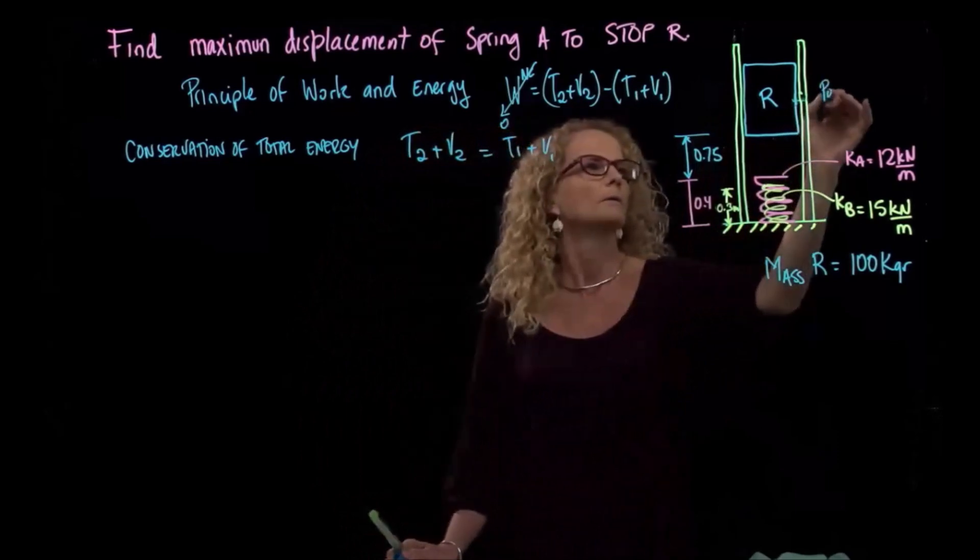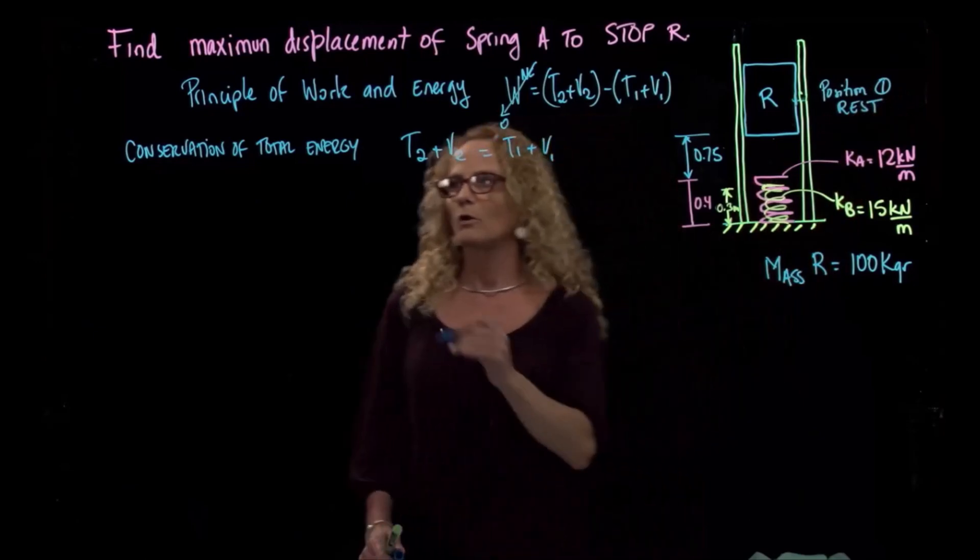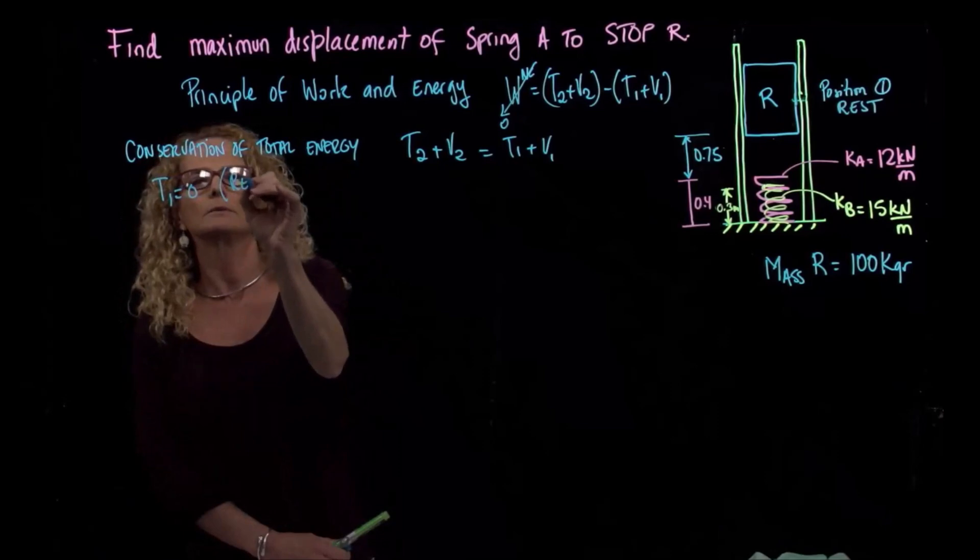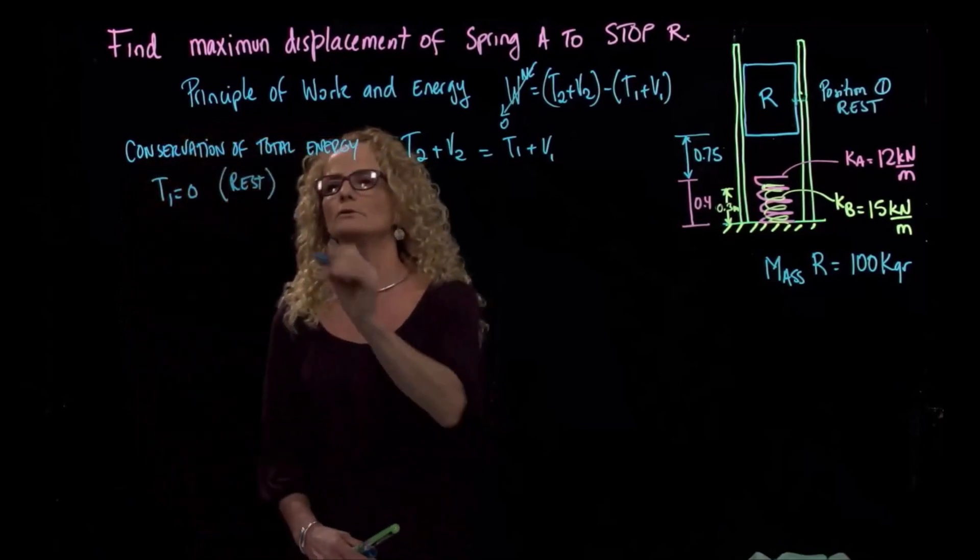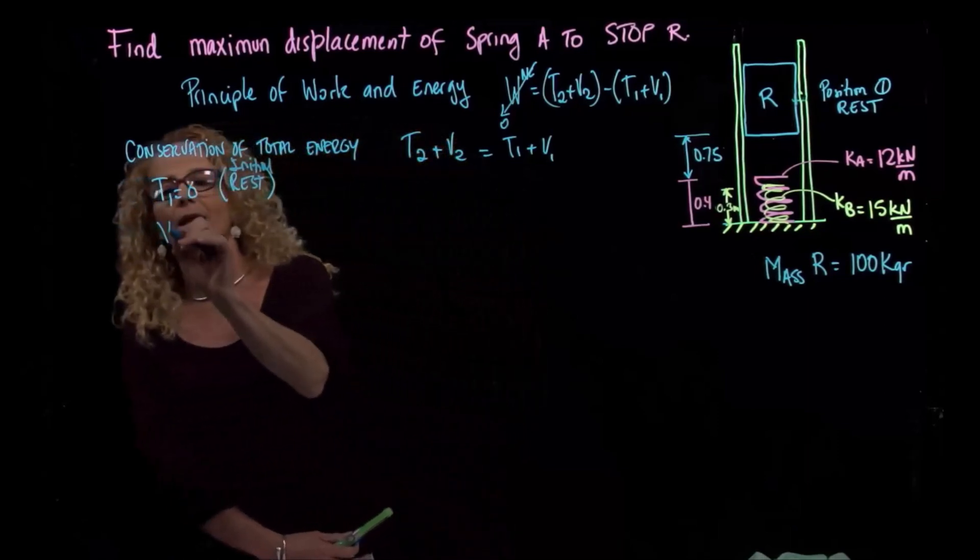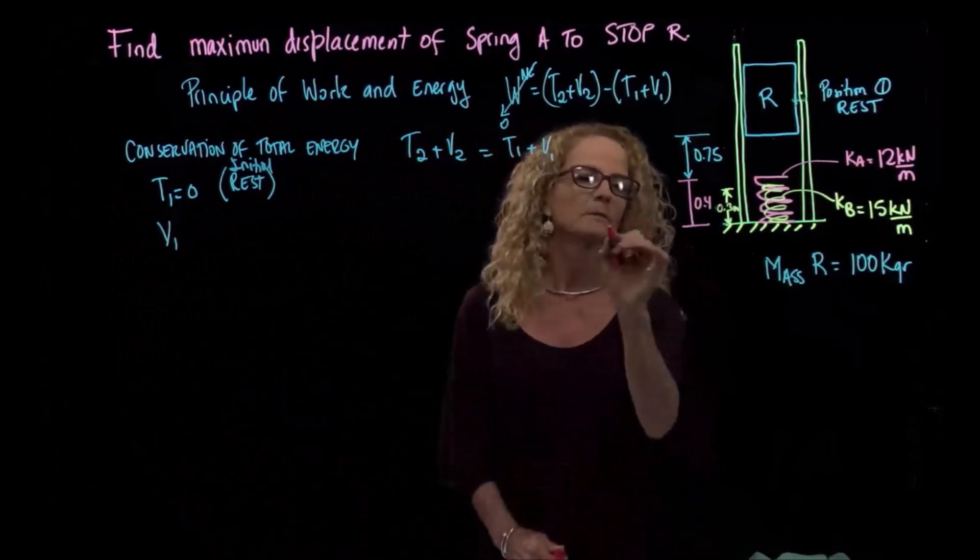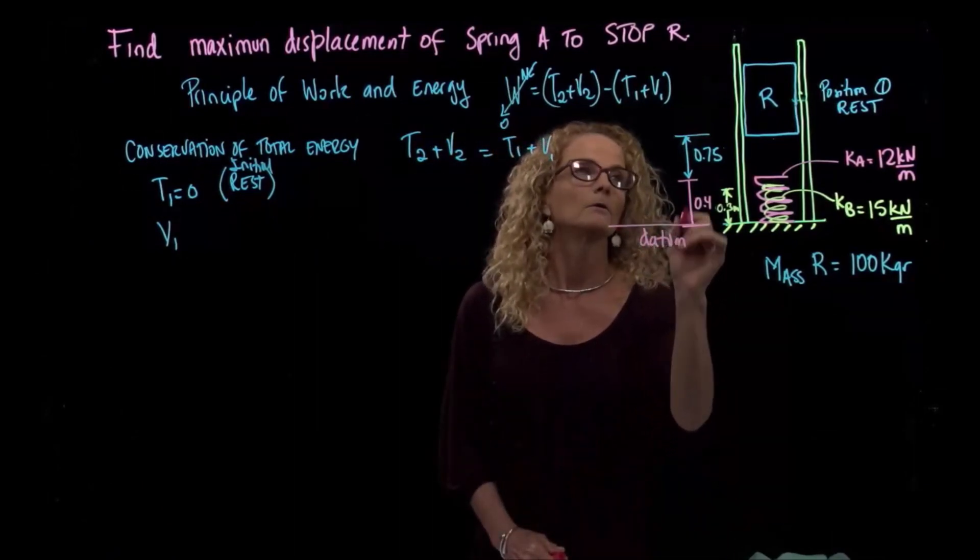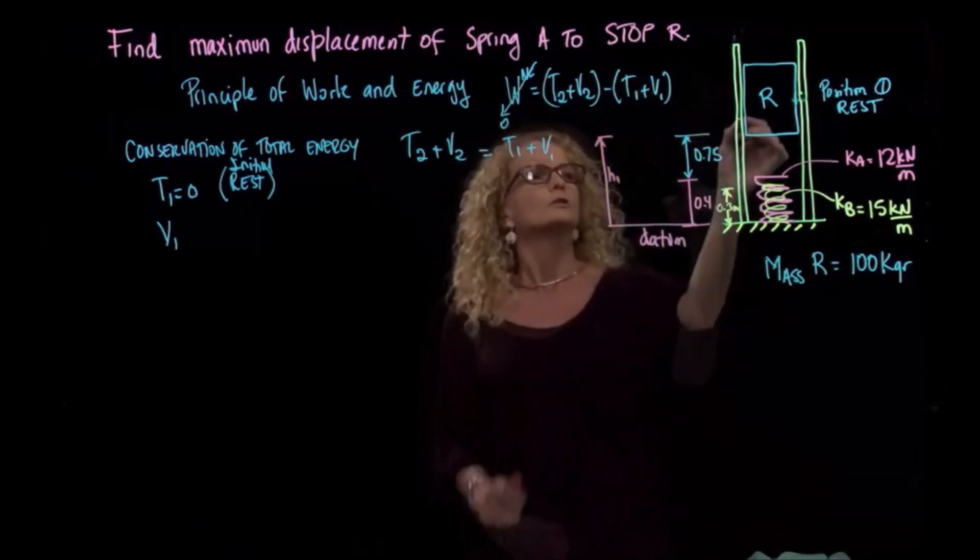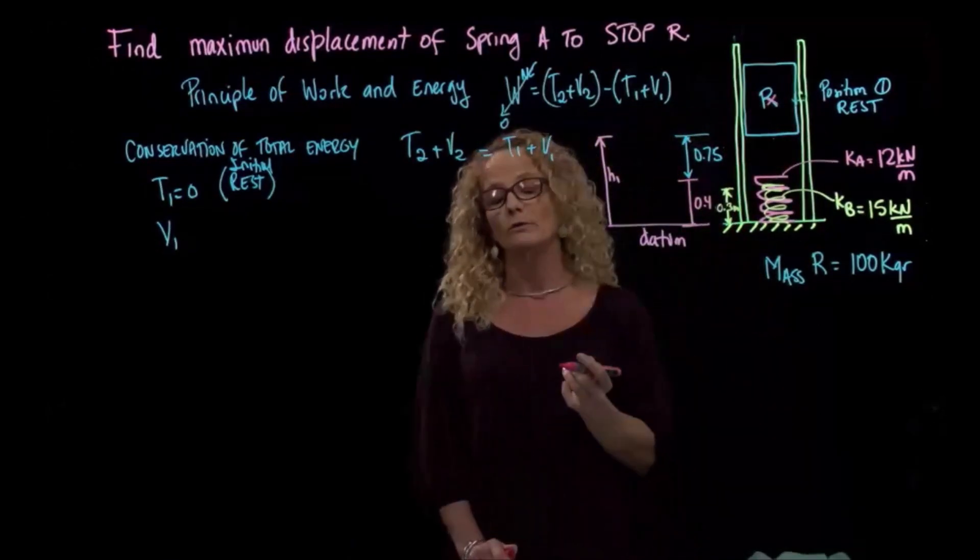Position one, we have rest. When we say that in position one we have rest, then the kinetic energy is equal to zero. This is initial rest. Then the potential energy depends where we put the datum. Let's put the datum over here.